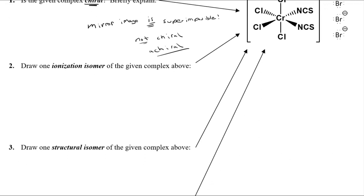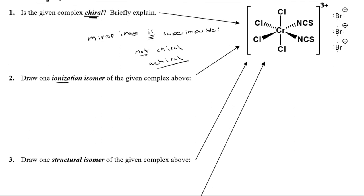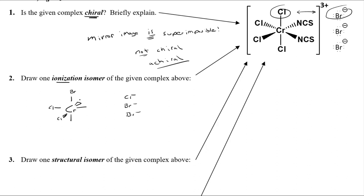Now we're going to draw some structures. The first one asks for an ionization isomer. Ionization means you take one ligand bound to the metal and swap it with a counter ion. So I'll put chromium here and swap out a bromo for that chloro — the chloro sits outside with the counter ions. Keep the same octahedral geometry intact. We still have our NCS (isothiocyanato) ligands.